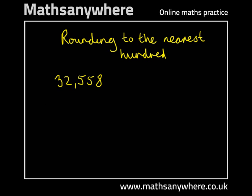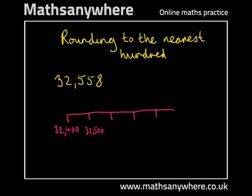First thing we might want to do is consider our number line with increments of 100. We'll call this 32,400, 32,500, 32,600, and so on.